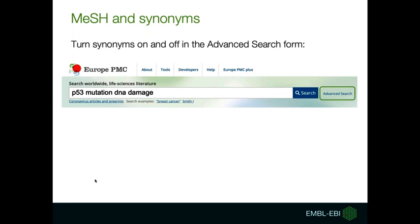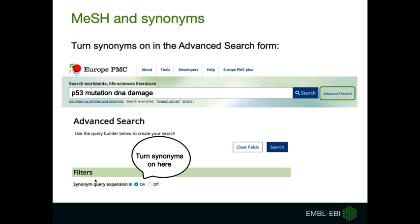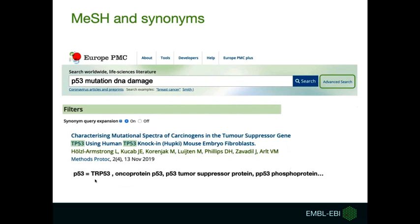You can turn synonyms on or off by selecting one of the filters in the advanced search page. Once in the advanced search page, you can scroll down to find filters and switch on synonym query expansion. The example here shows, highlighted in green, that your search result now includes articles mentioning TRP53 instead of P53.